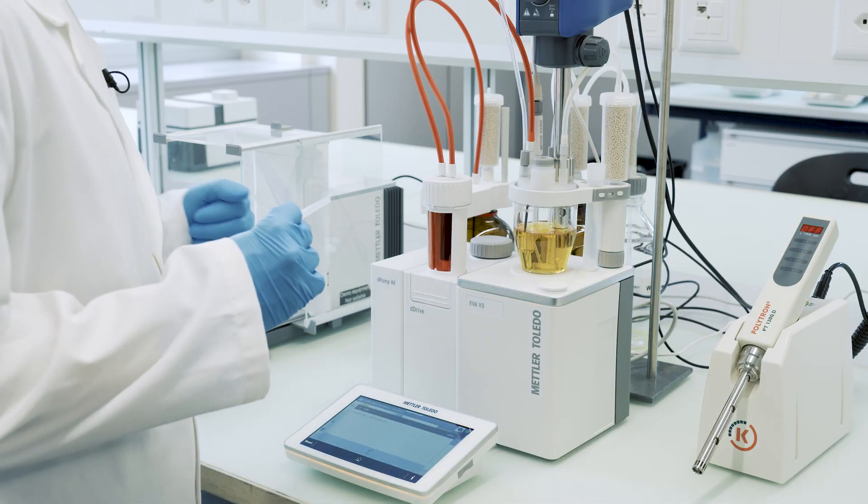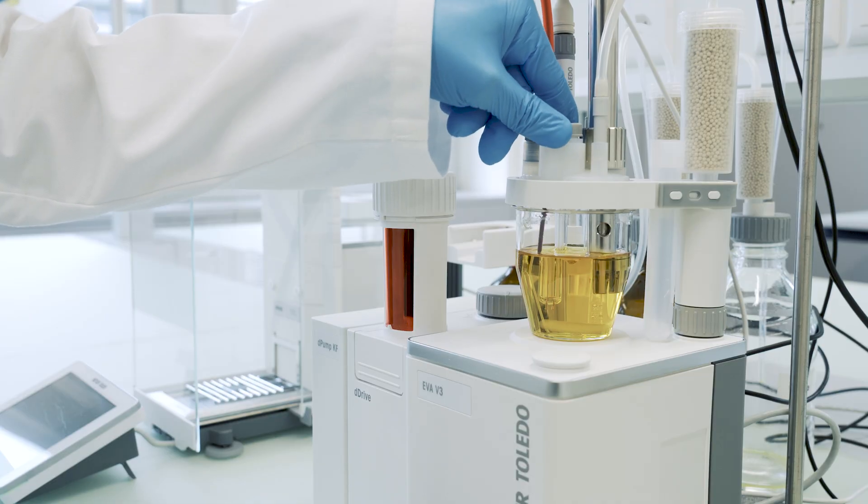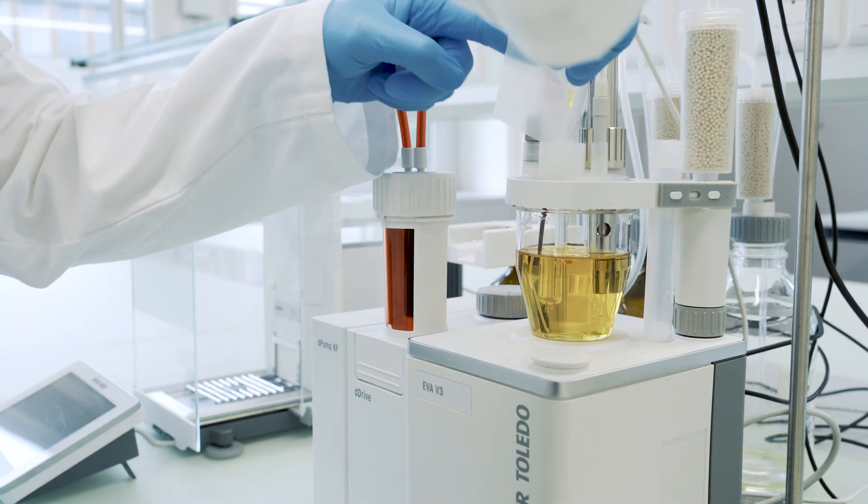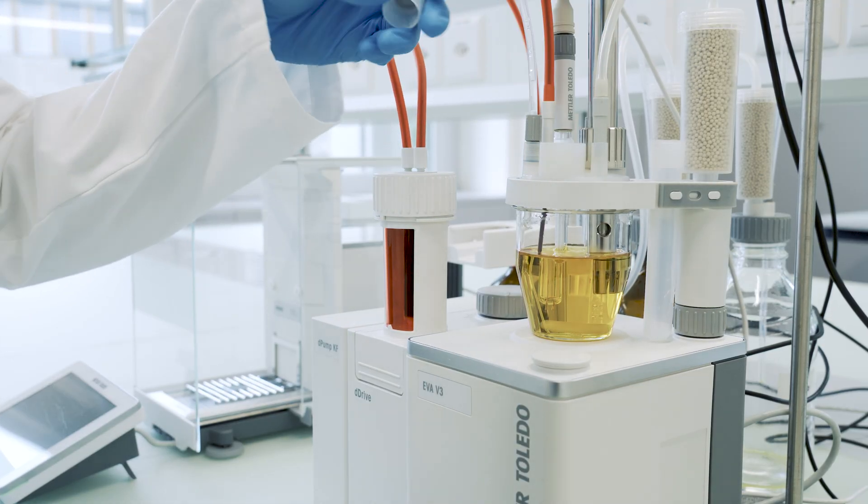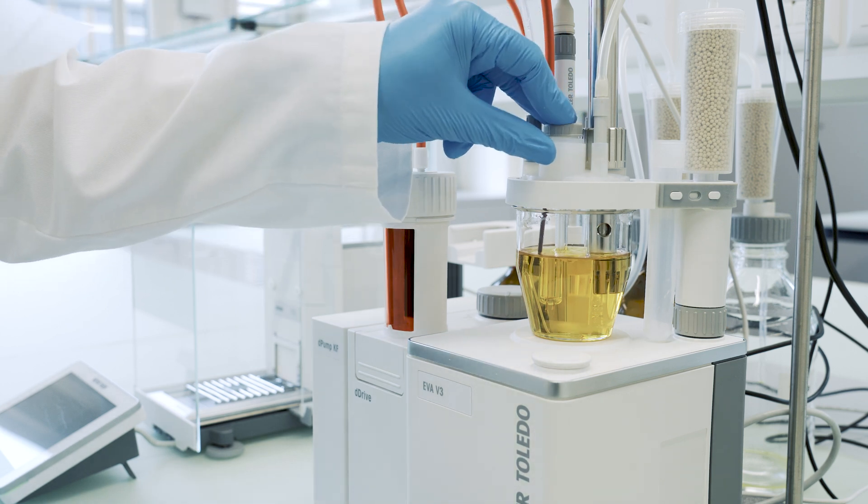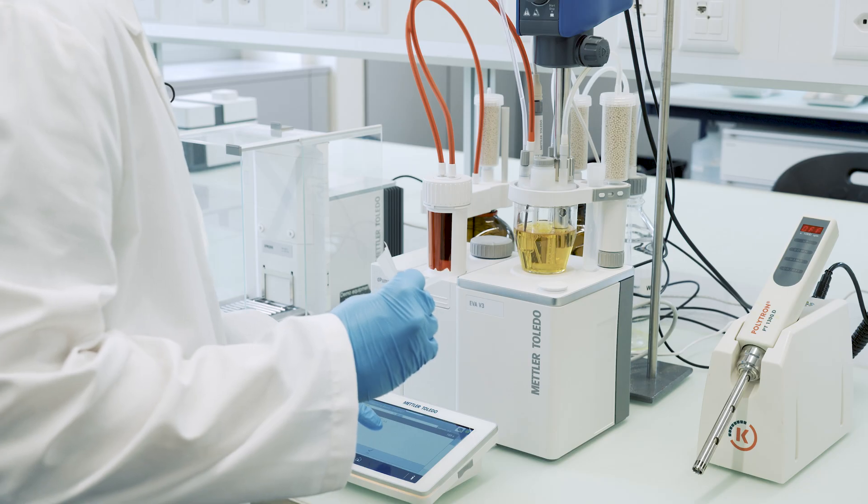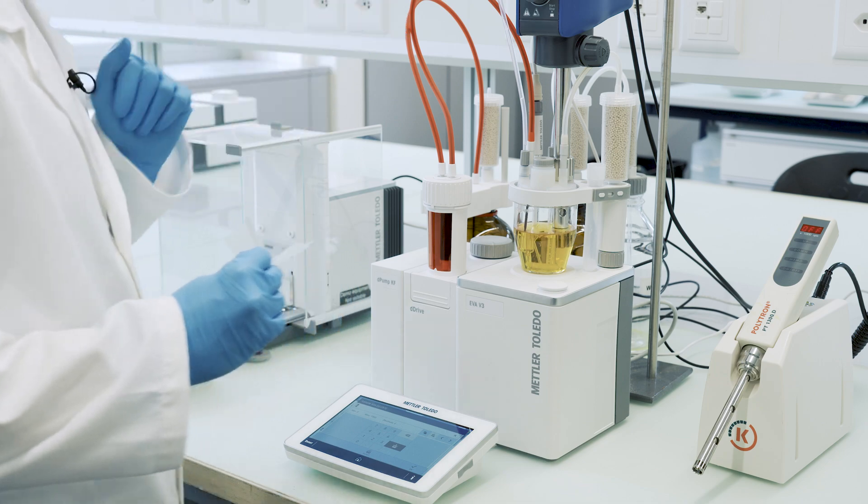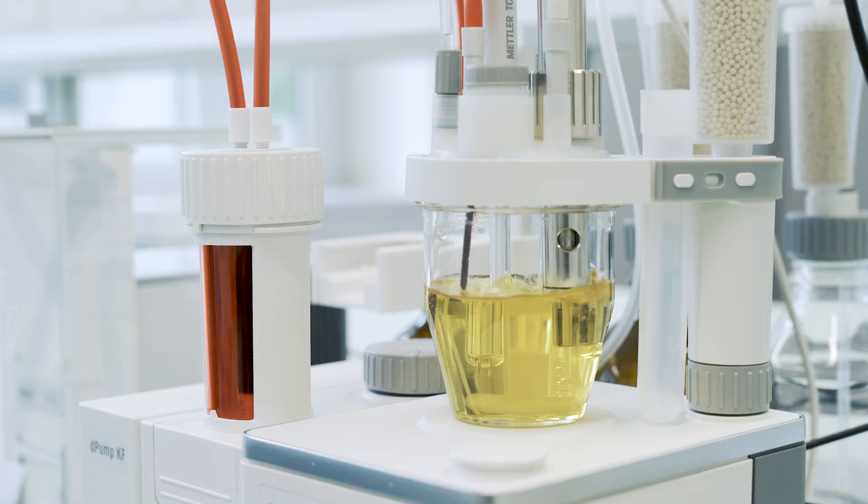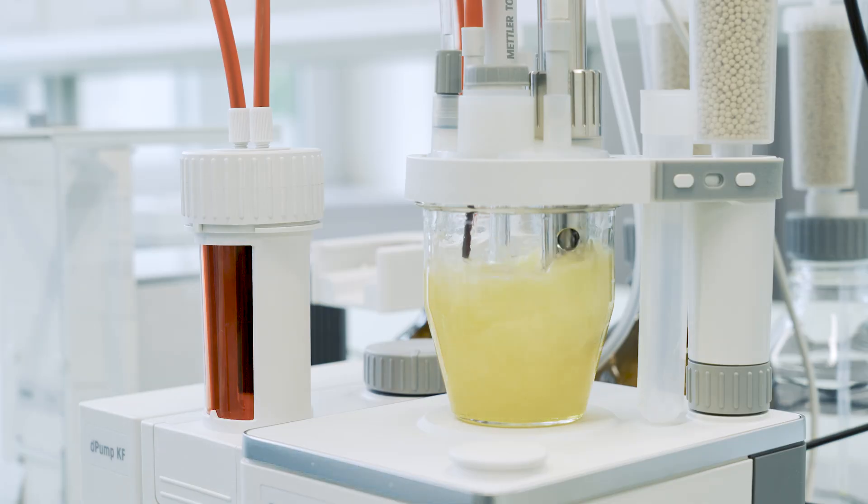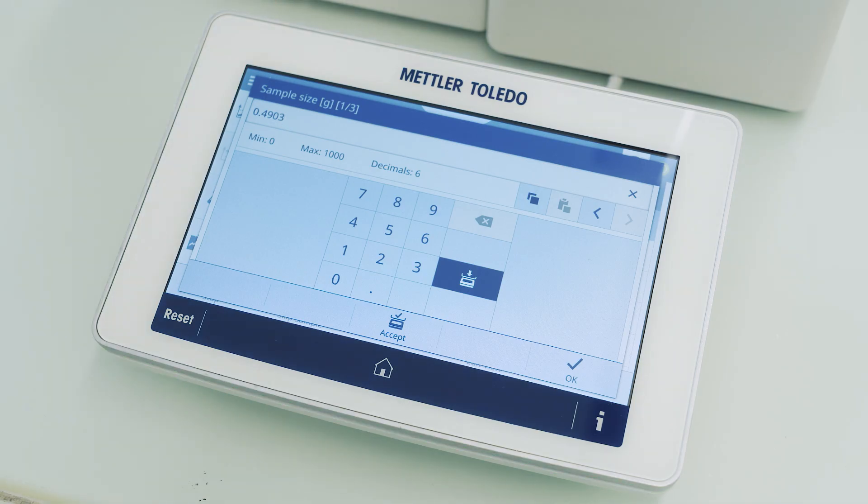Now we're being asked to add it. I'll remove the stopcock, add the piece of gummy bear, and once I accept it the homogenizer will start. The sample weight is determined with the back weighing technique and is automatically transferred from the balance to the titrator.